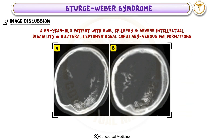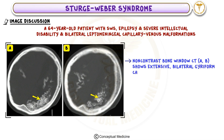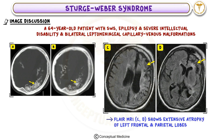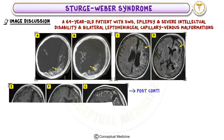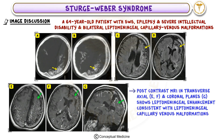Brain imaging of a patient with Sturge-Weber syndrome and bilateral leptomeningeal capillary venous malformations: A 64-year-old patient with SWS, epilepsy, and severe intellectual disability. Non-contrast bone window CT shows extensive bilateral gyroform calcifications in a curvilinear pattern, often called the tram-track sign. FLAIR MRI shows extensive atrophy of the left frontal and parietal lobes. Post-contrast MRI in transverse axial and coronal planes shows leptomeningeal enhancement consistent with leptomeningeal capillary venous malformations (LCVMs) in both cerebral hemispheres.